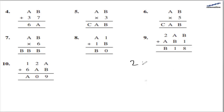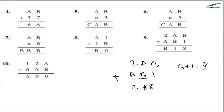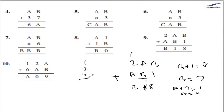For the 9th part, 2ab plus ab1 gives b118. So b plus 1 gives 8, meaning b is 7. Then a plus 7 gives 1, so a must be 4 with 1 carry. Then 1 plus 2 plus 4 gives 7, which satisfies the equation. So a is 4 and b is 7.